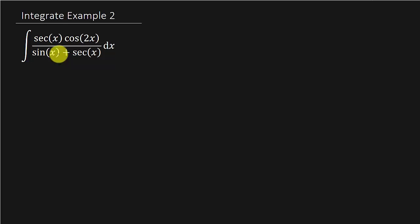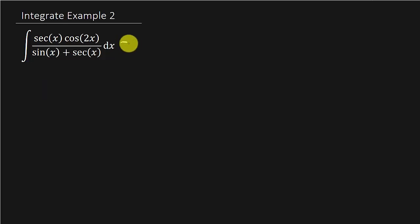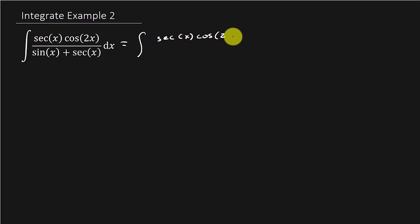I need to maybe get rid of secant, because the derivative of sine is cosine, but my problem is the angles. I do need a 2x here. Maybe what I could do is write this as secant x times cosine 2x over sine x plus secant x.